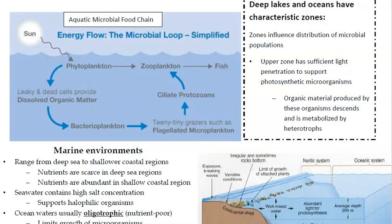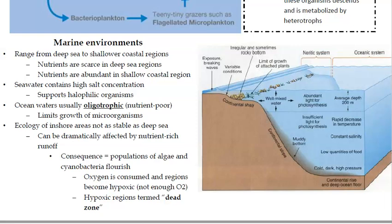Deep lakes and oceans have characteristic zones, each with different amounts of sunlight and therefore different organisms. The upper zone has sufficient light to support photosynthetic organisms; organic material they produce descends and is metabolized by heterotrophs. In marine environments, nutrients are scarce in the deep sea — the only producers there are chemoautotrophs — but very abundant in shallow coastal regions. Seawater supports halophilic microorganisms, and ocean waters are usually oligotrophic, meaning nutrient-poor, which limits microbial growth.